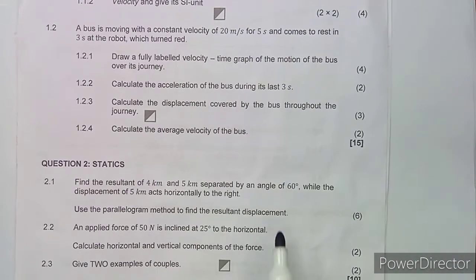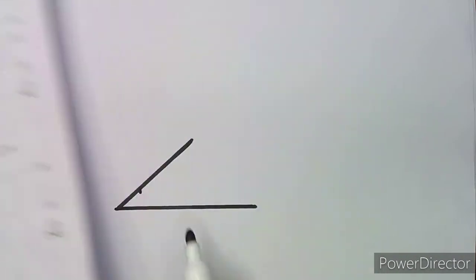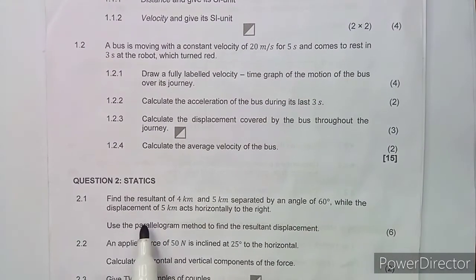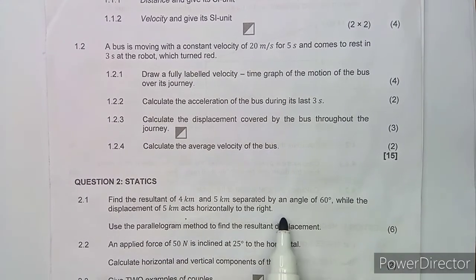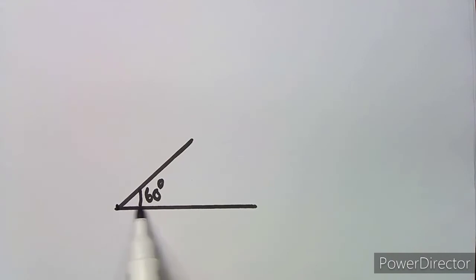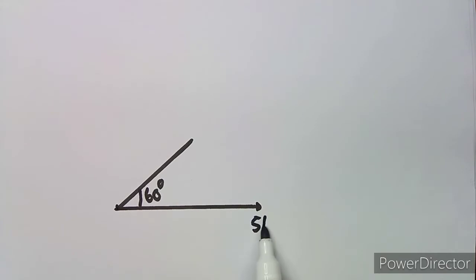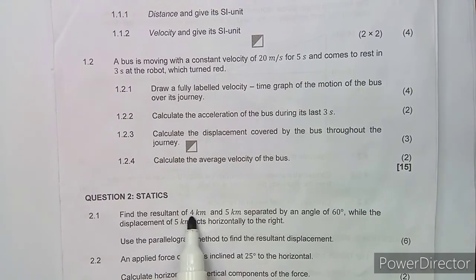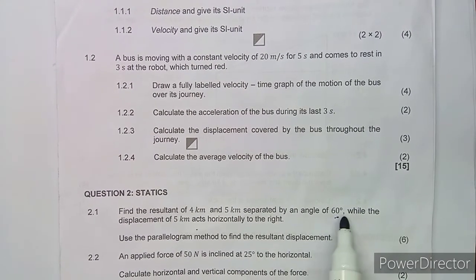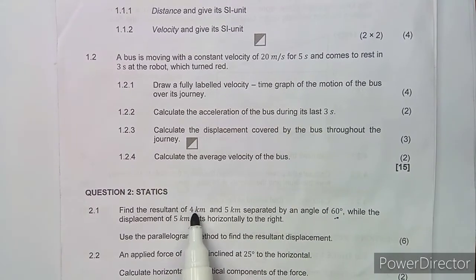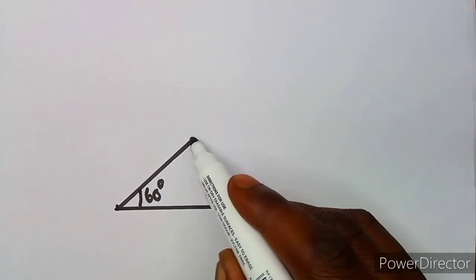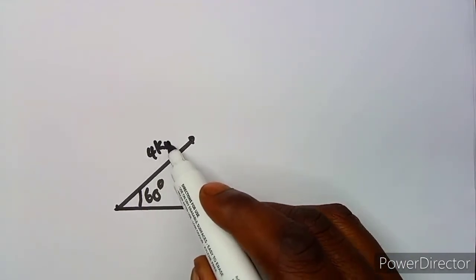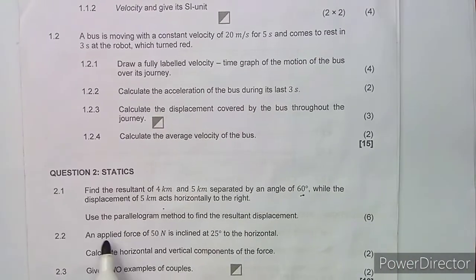Let me show you again — we've got an angle of 60 degrees in between here. The five kilometers acts horizontally to the right, so from this angle there's a displacement of five kilometers on the right side. Which means the four kilometers is going to be the one at the angle of 60 degrees — so this is where we're going to have our four kilometers.